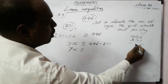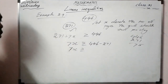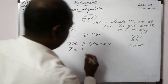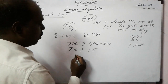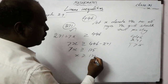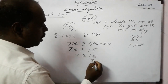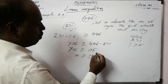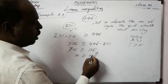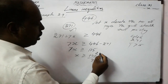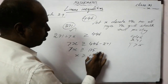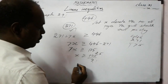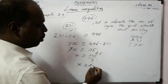Solving: 7x ≥ 446 − 271 = 175. So x ≥ 175/7 = 25. Therefore x is greater than or equal to 25.